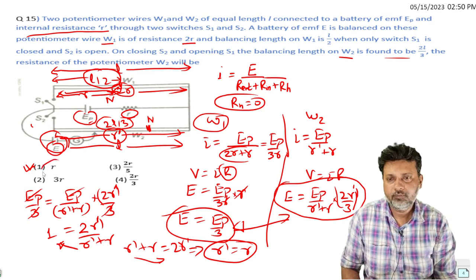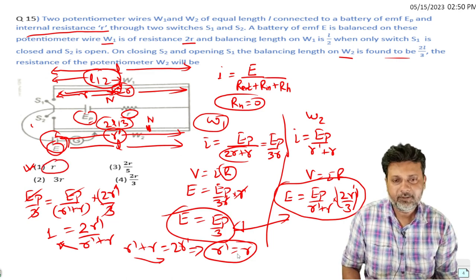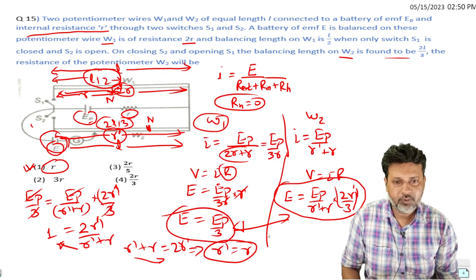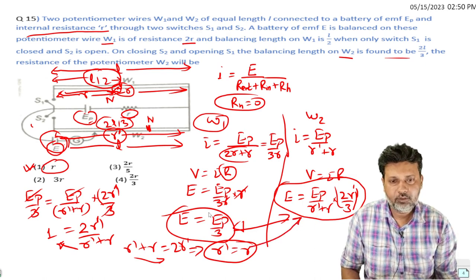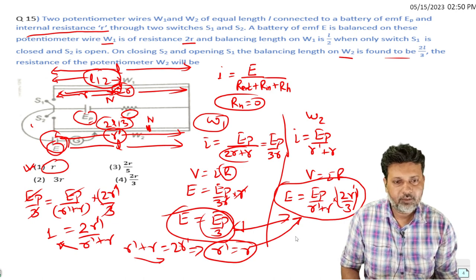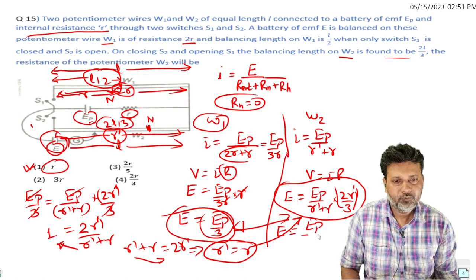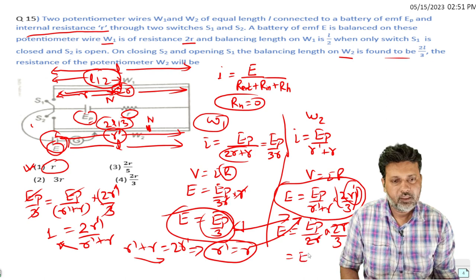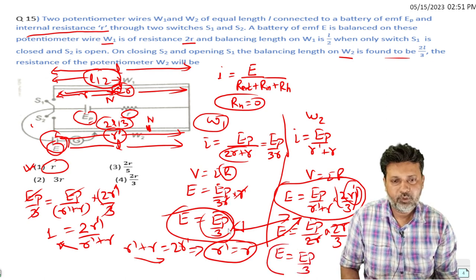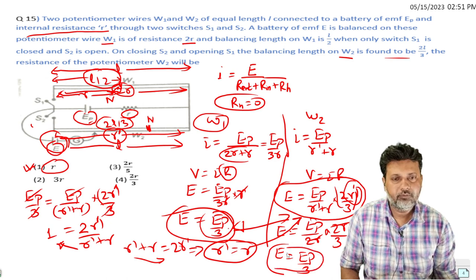Let's verify by putting r dash equals r. If r dash value is r, then E_p upon (r + r) times 2r divided by 3 equals E_p upon 2r times 2r by 3. The 2r cancels giving E_p upon 3, which equals E_p by 3. Verified.